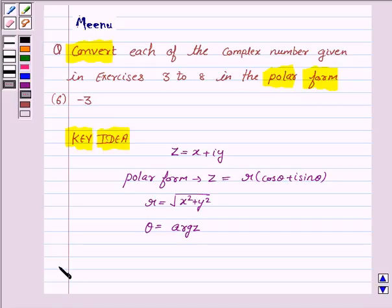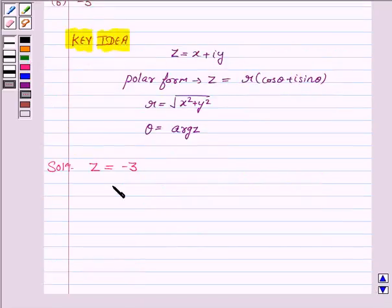Let's proceed to the solution. z = -3. Now, this can be written as -3 + 0i.